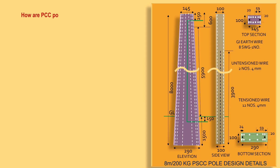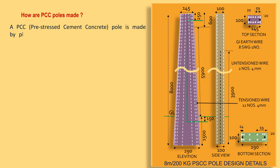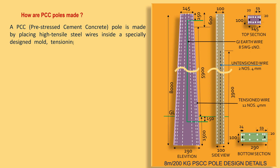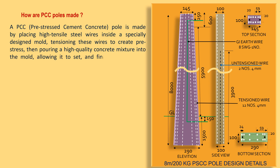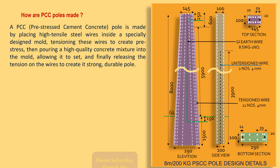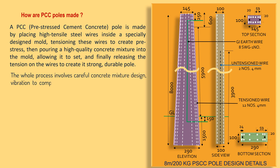A PCC pole is made by placing high tensile steel wires inside a specially designed mould, tensioning these wires to create pre-stress, then pouring a high quality concrete mixture into the mould, allowing it to set, and finally releasing the tension on the wires to make it stronger. The whole process involves careful concrete mixture design, vibration to compact the concrete, and a curing period to achieve the desired strength.